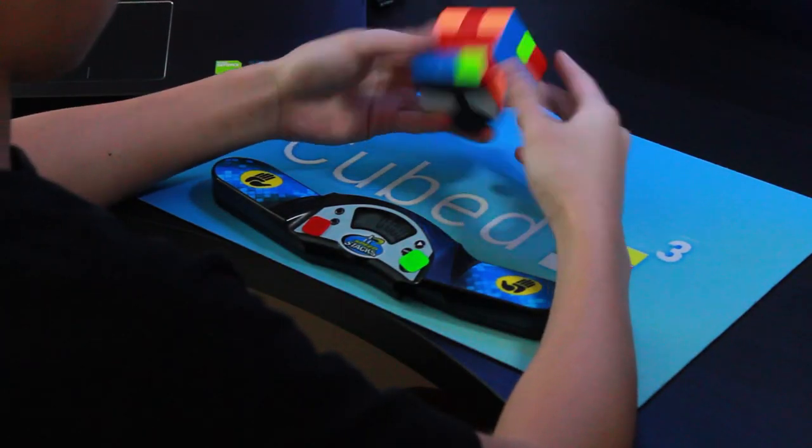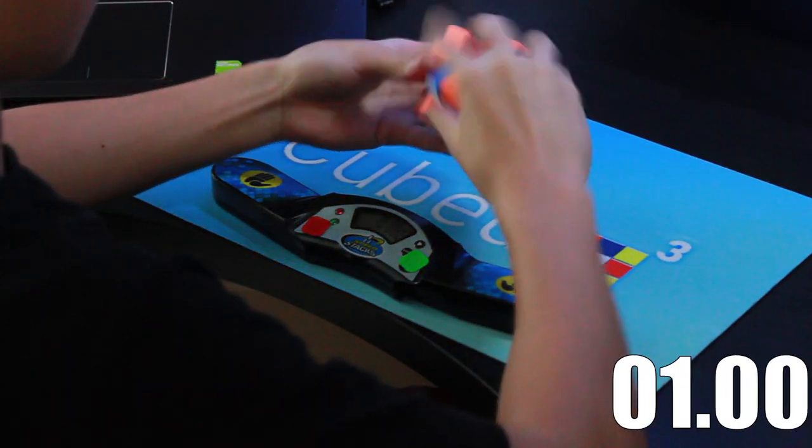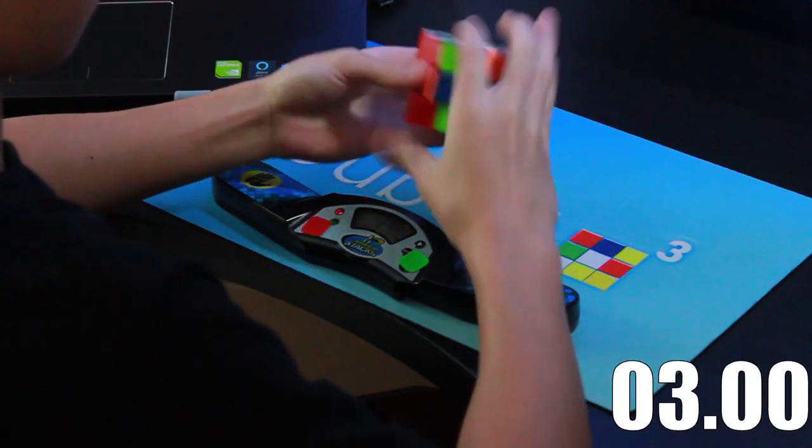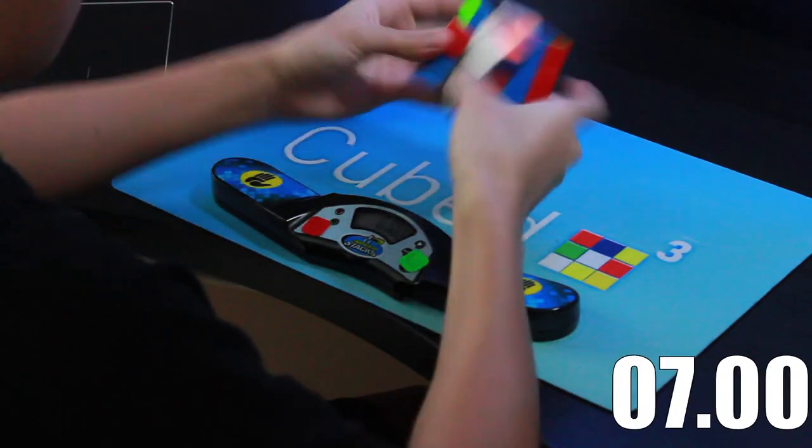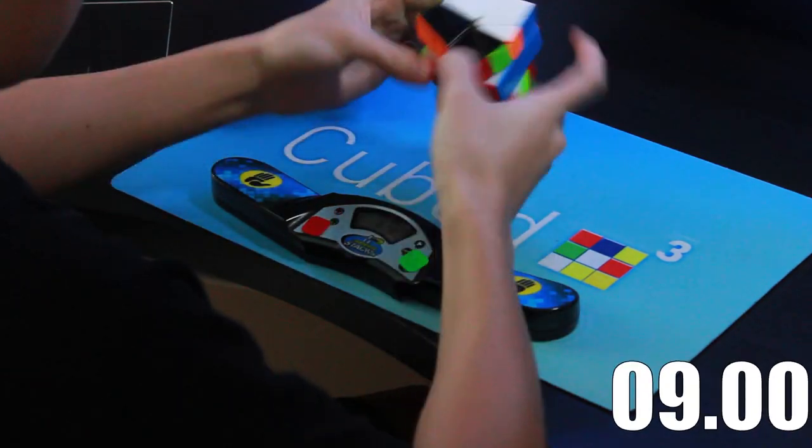Hey guys, today I'm going to be starting a series where I share my progress with improving on square one. Over the past couple months, I began to practice this event much more frequently, and my average has dropped a considerable amount.